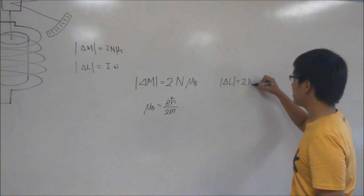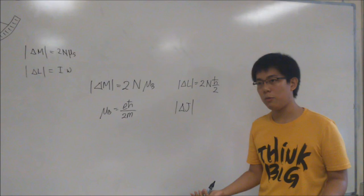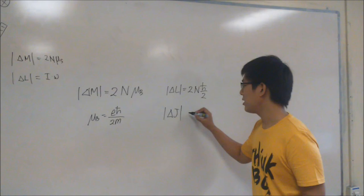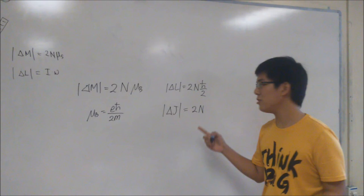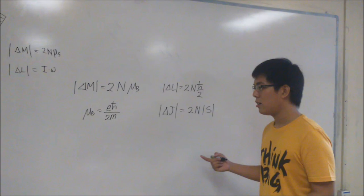Now, the measurement of delta L is just 2 times N times h-bar divided by 2. If delta J, which is the total angular momentum from the electrons, all the electrons inside the magnet, is just 2 times the number of the free electrons times the spin of the individual electrons.